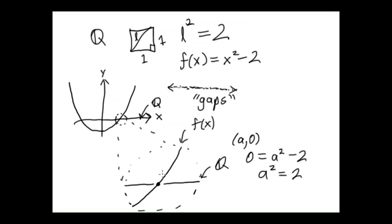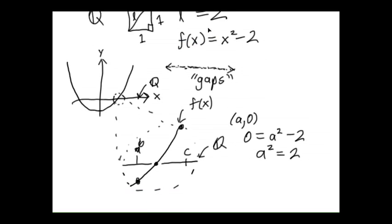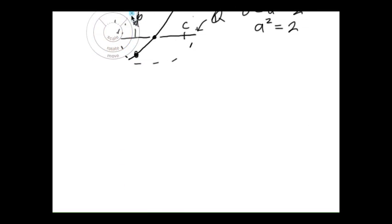Can you imagine the havoc that this would play? Remember the intermediate value theorem? One case of it was that if you knew that a function had a negative value at some point b and a positive value at c, then it would hit zero somewhere in between. But in this case it doesn't. That's highly non-intuitive for a setting in which we would like to do calculus.